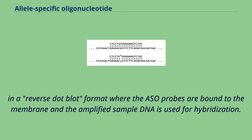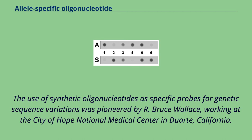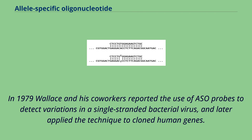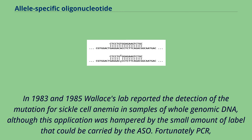The use of synthetic oligonucleotides as specific probes for genetic sequence variations was pioneered by R. Bruce Wallace, working at the City of Hope National Medical Center in Duarte, California. In 1979, Wallace and his co-workers reported the use of ASO probes to detect variations in a single-stranded bacterial virus, and later applied the technique to cloned human genes. In 1983 and 1985, Wallace's lab reported the detection of the mutation for sickle cell anemia in samples of whole genomic DNA, although this was hampered by the small amount of label that could be carried by the ASO.